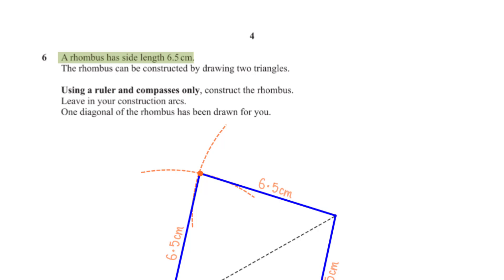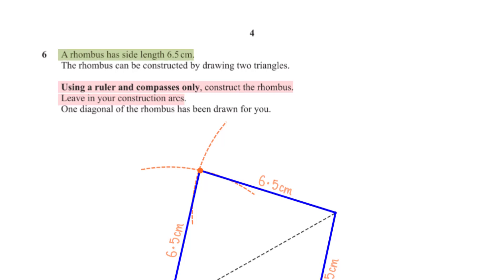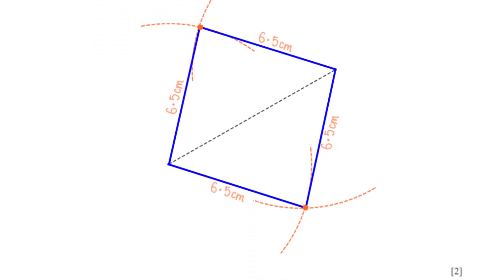A rhombus has side length 6.5 centimetres. The rhombus can be constructed by drawing two triangles using a ruler and compasses only. To draw this rhombus, open the compass to 6.5 centimetres, stand at one point on the line and inscribe an arc above and below, then do the same from the other point. Connect the lines of the rhombus.